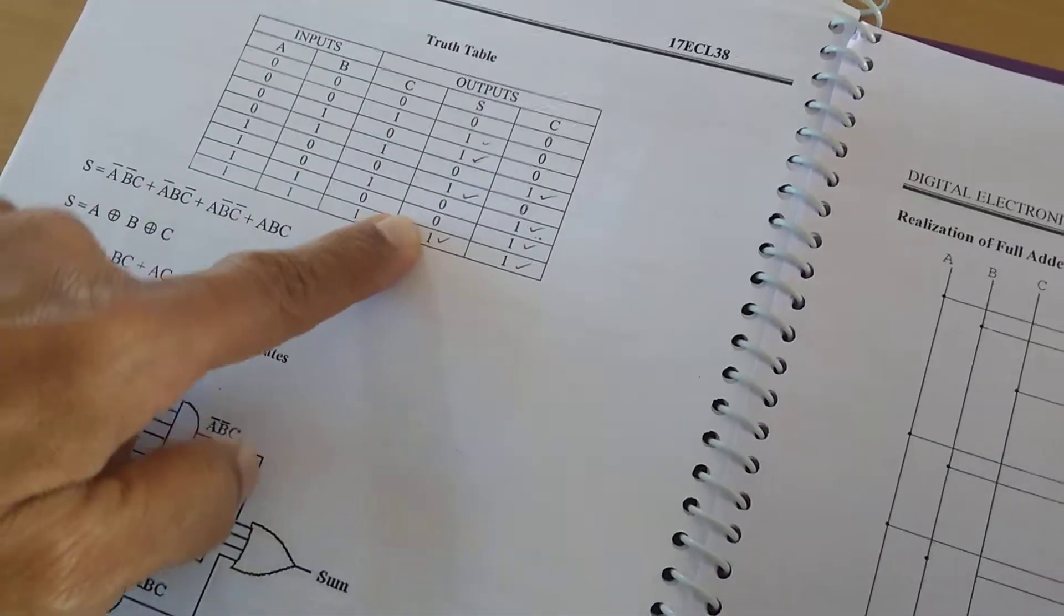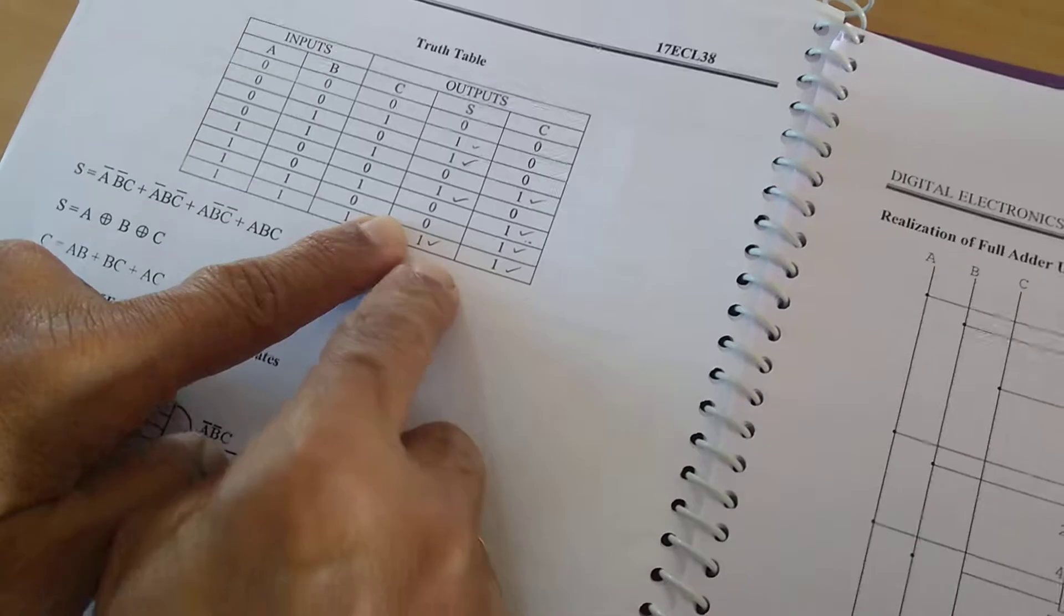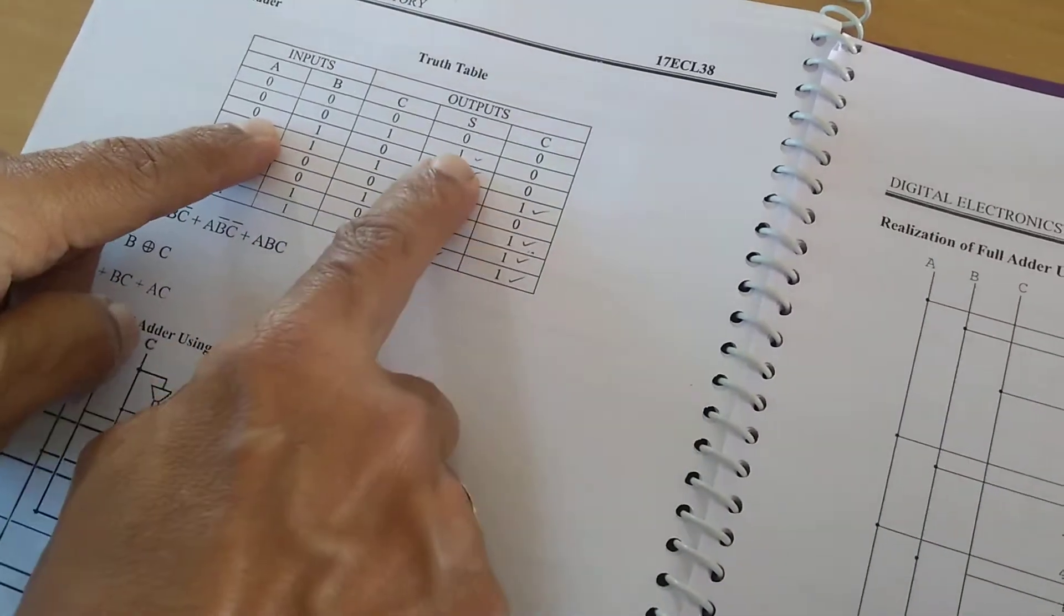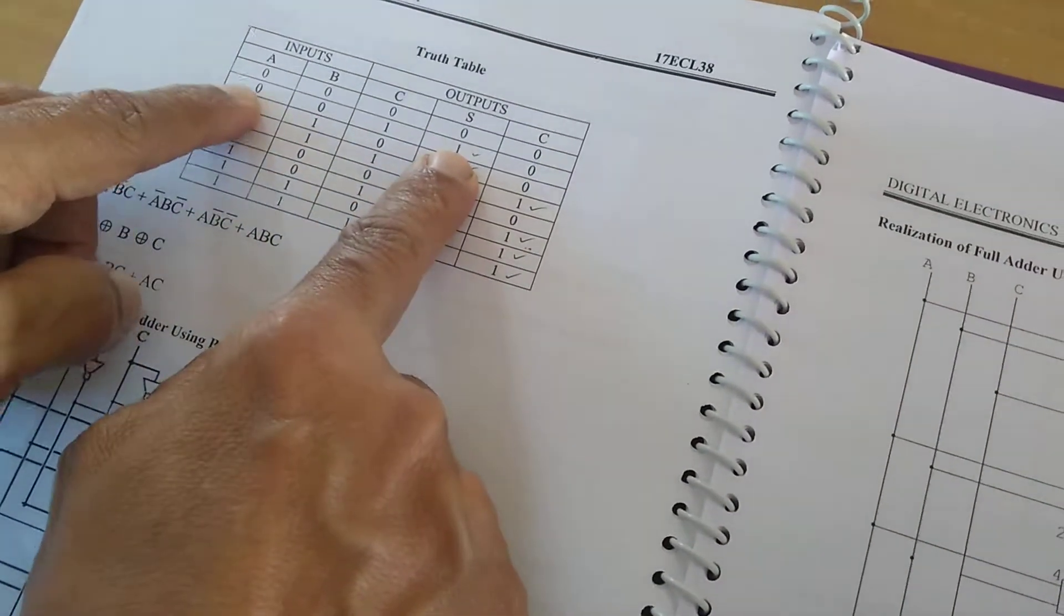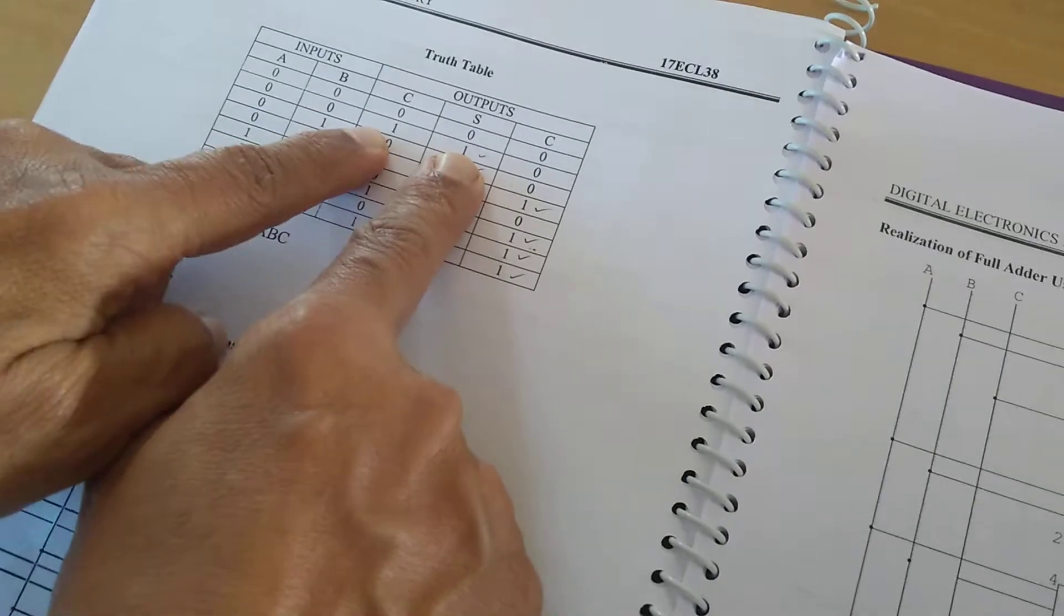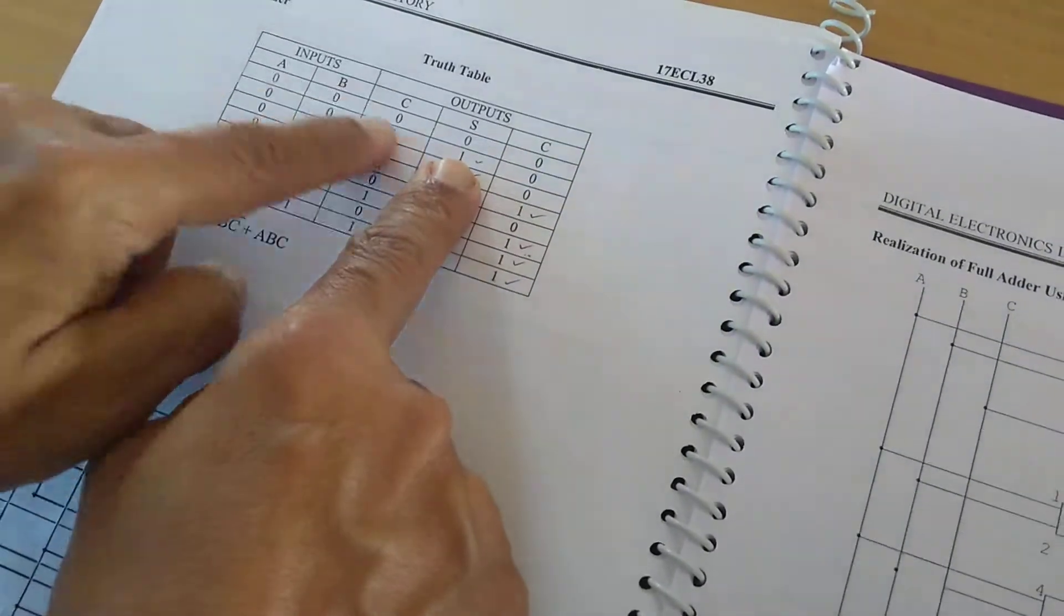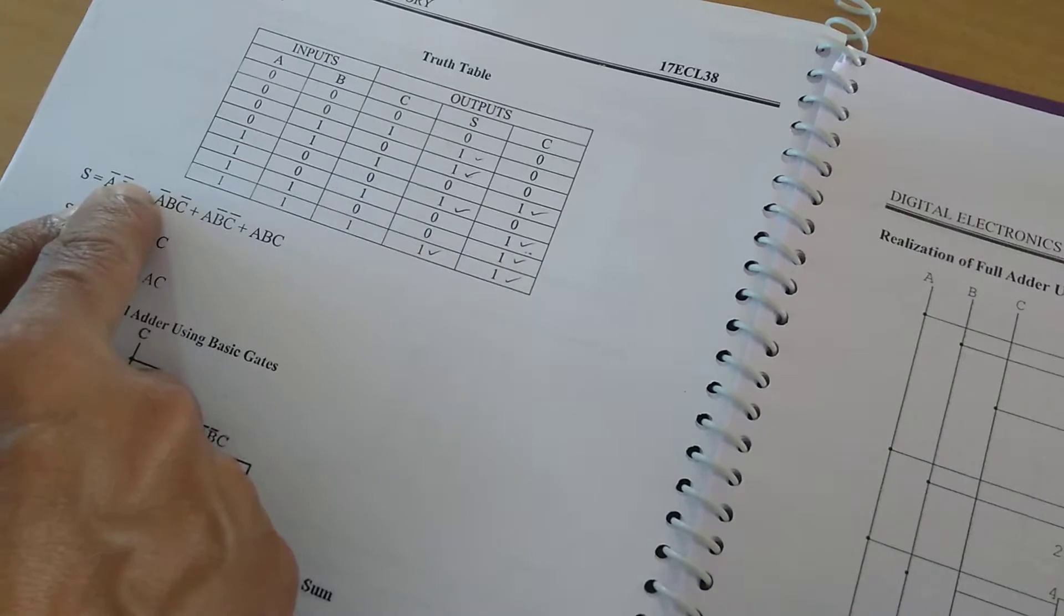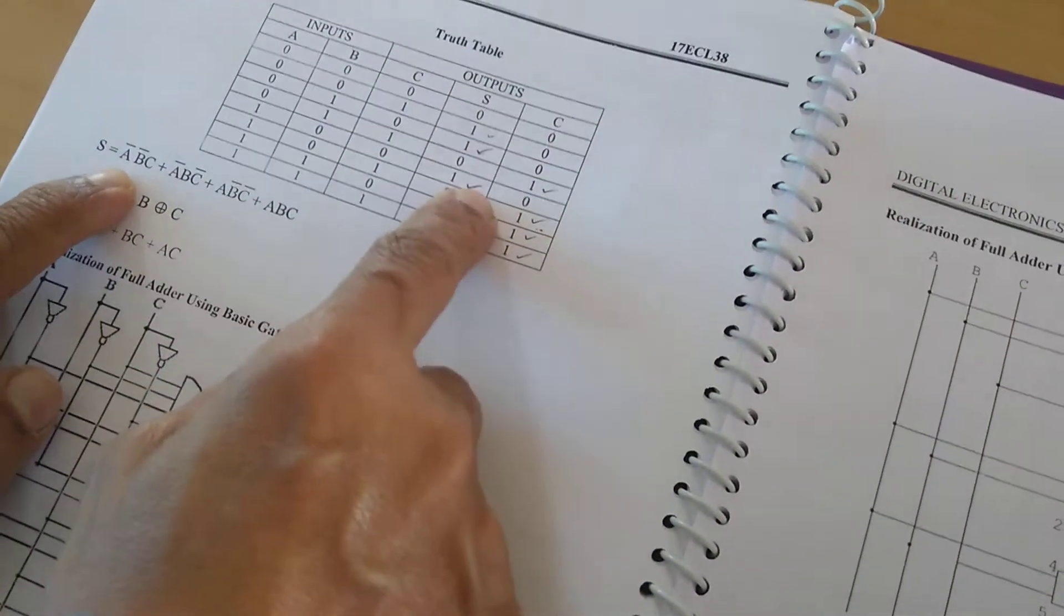Wherever the four ones are there, we have to take those terms. For example, for the first one A is 0, B is 0, and C is 1, so that is taken as A bar B bar C. So that A bar B bar C is written here. Similarly for all the terms.